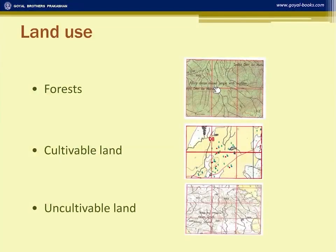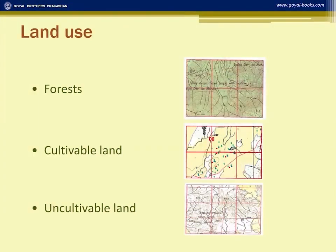You don't need to mention what you study in geography separately, such as deciduous or evergreen. You simply state what is written there — in this case, it is written 'fairly dense mixed jungle with bamboo.' Cultivable land is colored yellow, called 'yellow wash,' and the area is automatically taken as cultivable.